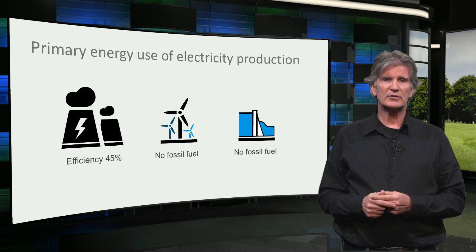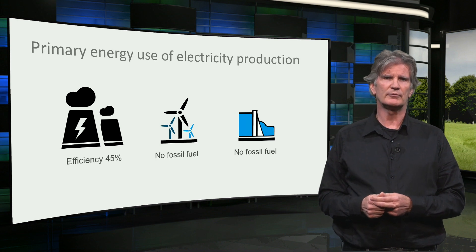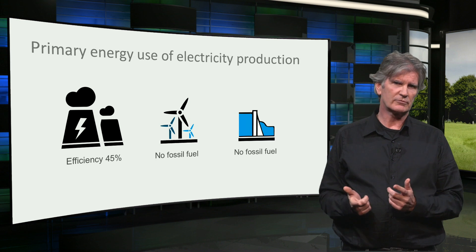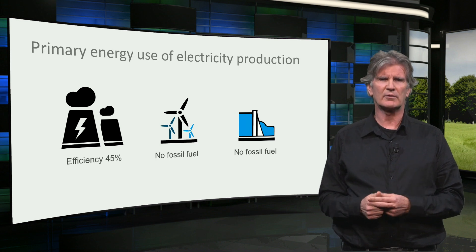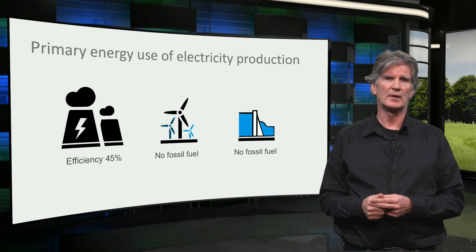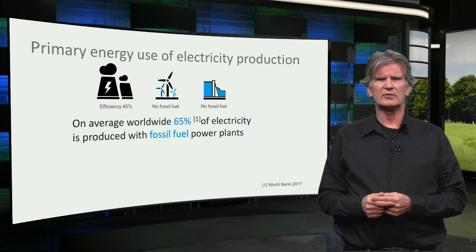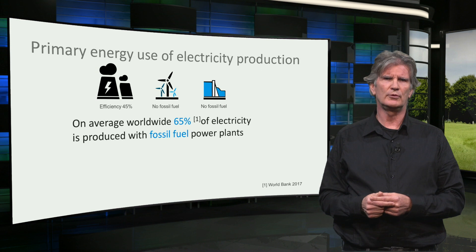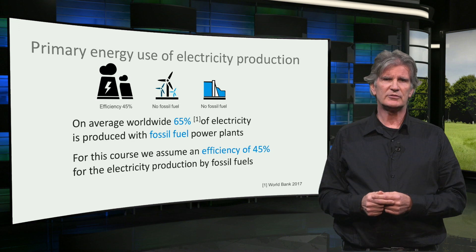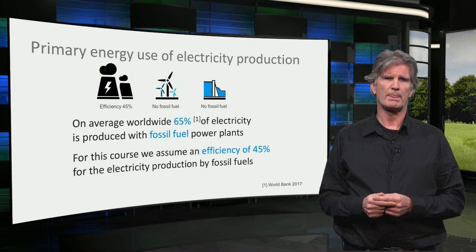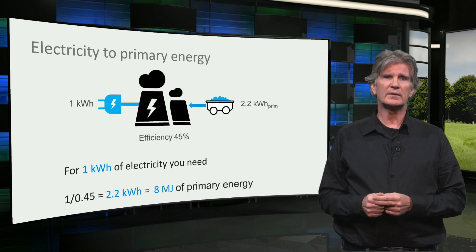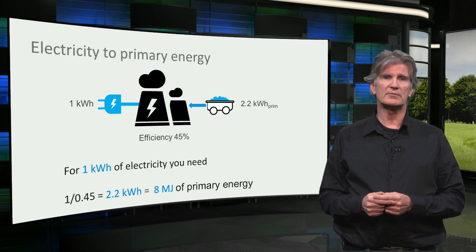Most of the electricity worldwide is produced in a power plant using fossil fuels like coal or gas. If the electricity comes from wind turbines or hydroelectric power, no fossil fuels are used. On average worldwide, 65% of the electricity is produced with fossil fuel power plants. For this course, we take an average efficiency of 45% for electricity production by fossil fuels. So for 1 kilowatt hour of electricity, you need 2.2 kilowatt hours or 8 megajoules of fossil fuels — so-called primary energy.